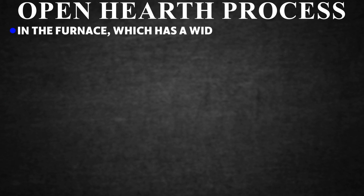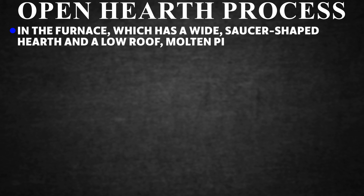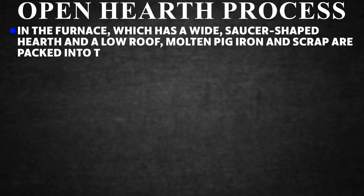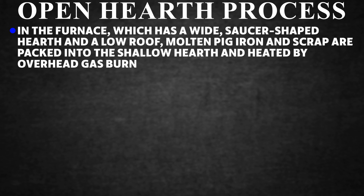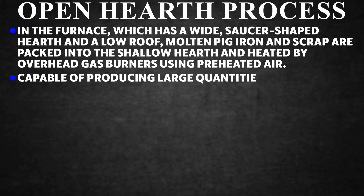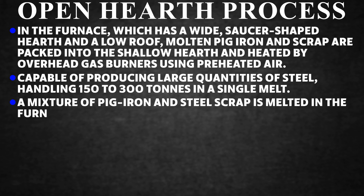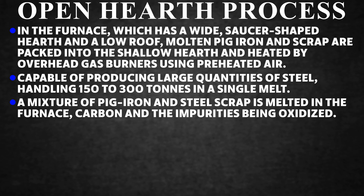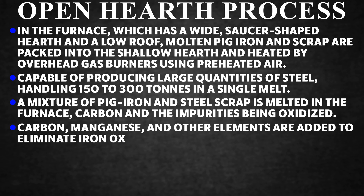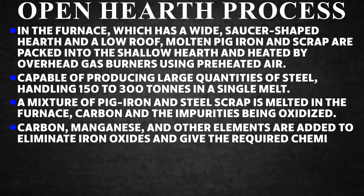Open Hearth Process. The furnace has a wide, saucer-shaped hearth and a low roof. Molten pig iron and scrap are packed into the shallow hearth and heated by overhead gas burners using preheated air, capable of handling 150 to 300 tons in a single melt. A mixture of pig iron and steel scrap is melted, with carbon and impurities being oxidized. Carbon, manganese, and other elements are added to eliminate iron oxides and achieve the required chemical composition.